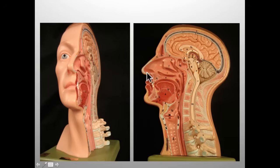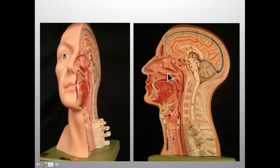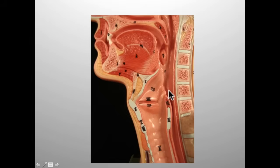Now if we look at the palate, the upper part of the mouth is this hard palate first, and then there's a soft palate which in the middle ends with that little finger-like projection called the uvula. Here you see the opening of the eustachian tube. These are called turbinates that congest when you get a cold and make your nose stuffy. So that's the orientation in general.